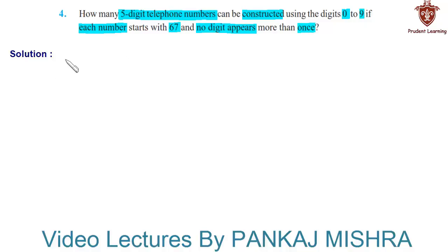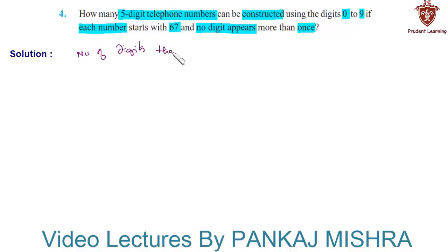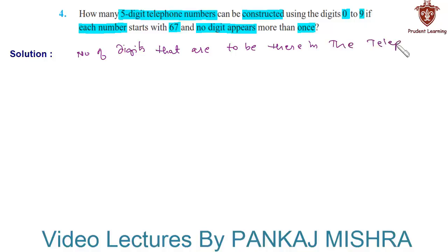Let us see the solution for this problem. In this question we are given that the number of digits in the telephone number is 5.